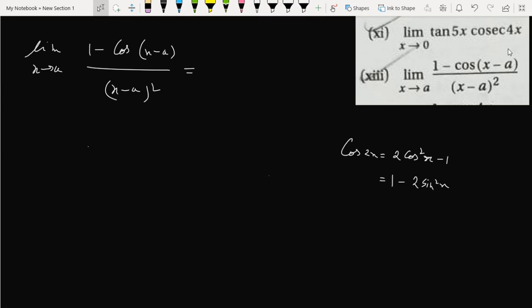So from here we can write, just interchanging both sides, we can write that 2 sine square x equals 1 minus cos 2x. So likewise here we can write 2 sine square, just x by 2. Okay, this here 2x became x, here x minus a became x minus a by 2.